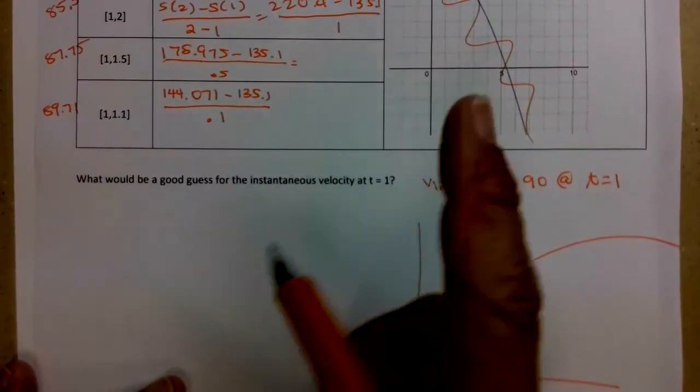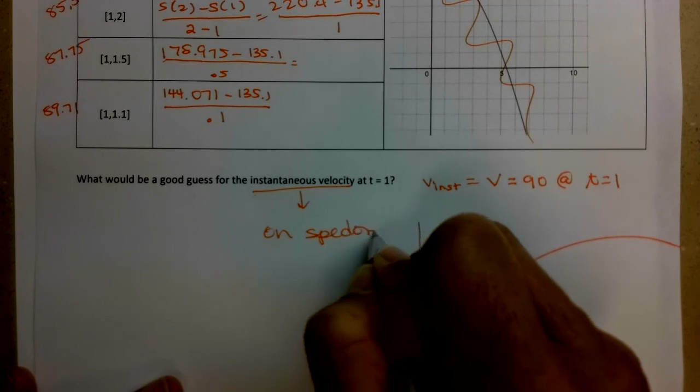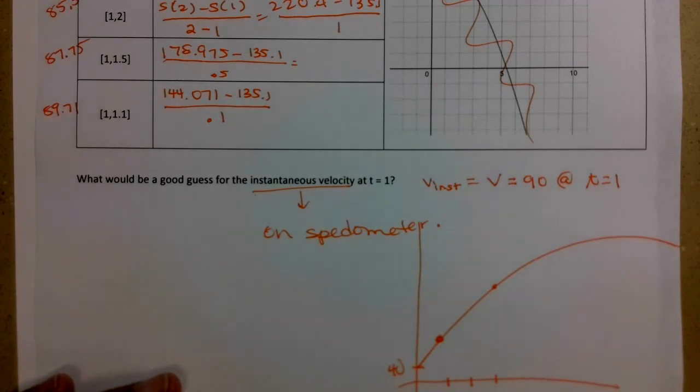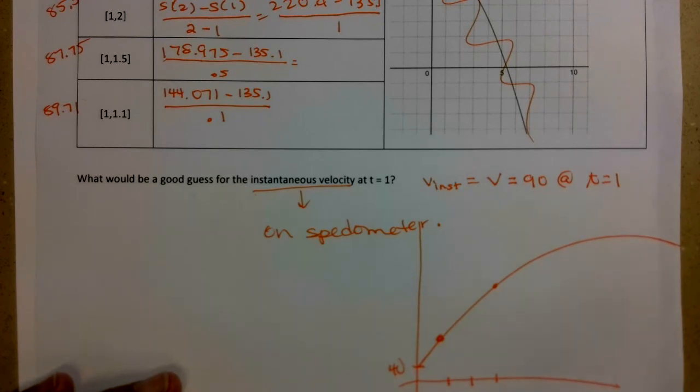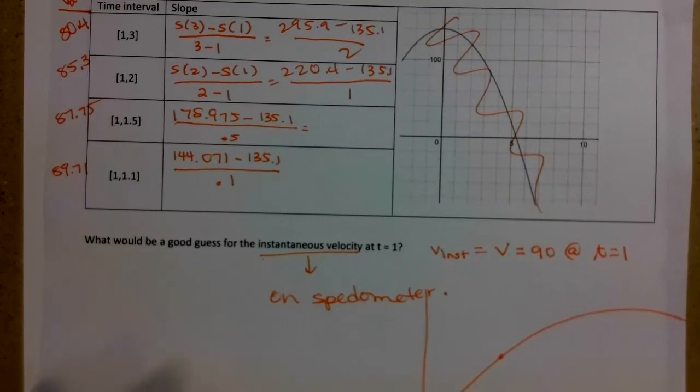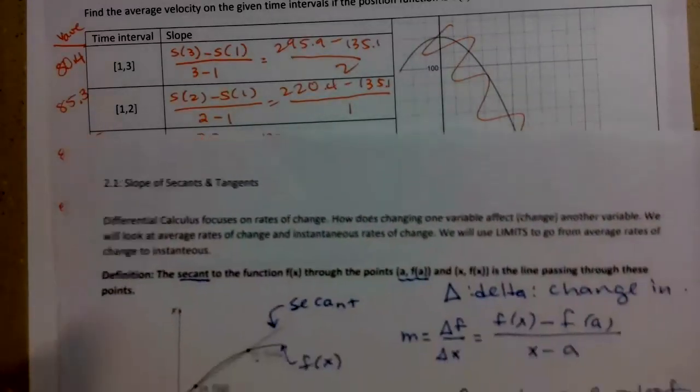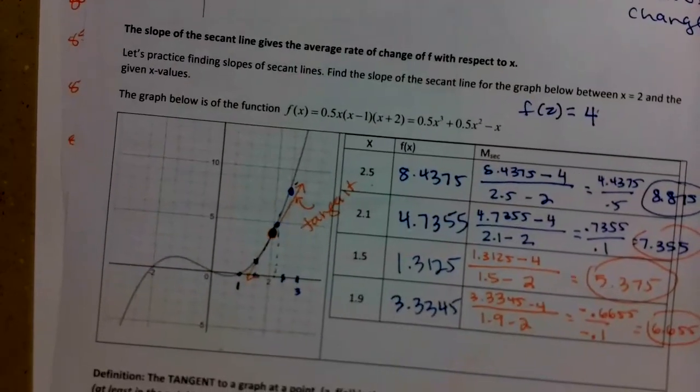So instantaneous velocity, by the way, this is what you see on your speedometer. So if you're traveling and you look down and you see you're going 65 miles per hour, that's your instantaneous velocity. Average velocity would be, it takes me two and a half hours to drive to Seattle. So I would know the distance it takes to go to Seattle. I'd have the total time it takes. And if I do that division, that gives me my average velocity. That's the difference between instantaneous and average rates of change. And remember, secant is the average rate of change, and tangent is the instantaneous rate of change.